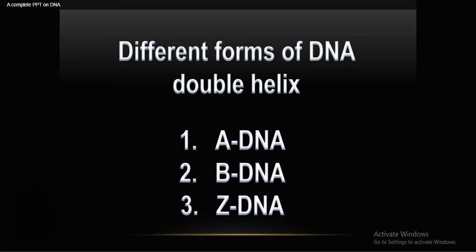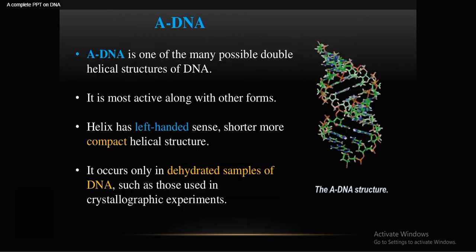Welcome back dear students. We start with the different forms of DNA double helix: A-DNA, B-DNA, and Z-DNA. These are the three common different forms of DNA.